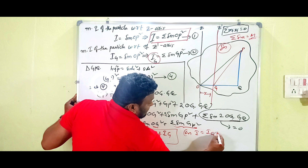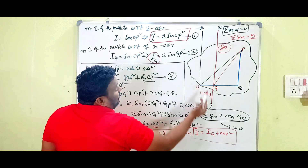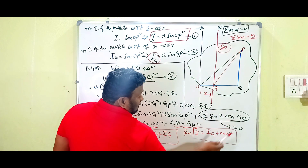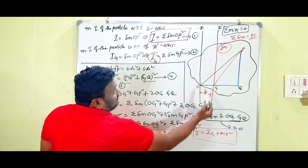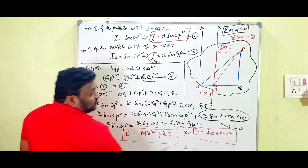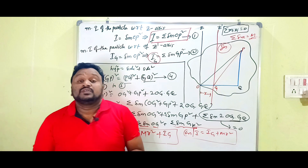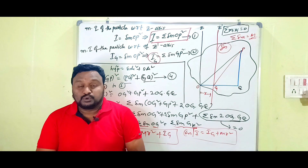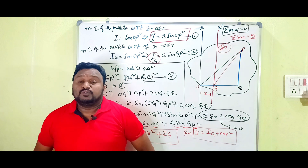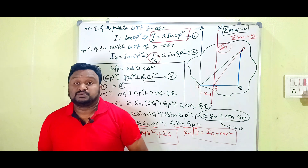Thus I = Ig + MR², where I is the moment of inertia of the plane lamina with respect to the Z axis, Ig is the moment of inertia about the axis passing through the center of mass, and MR² is the product of the total mass and the square of the distance between the two axes. This proves the parallel axis theorem. If you found this helpful, please like, share, and comment, and suggest our channel to your friends. Thank you for watching.